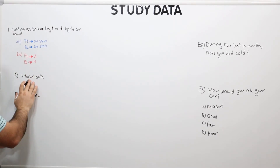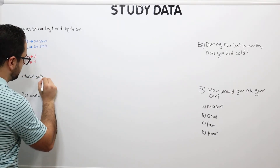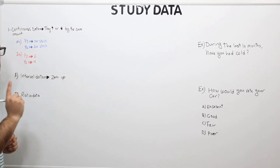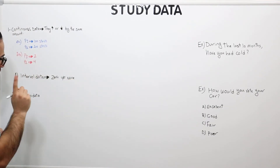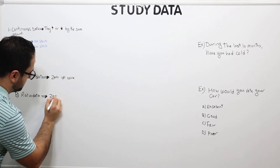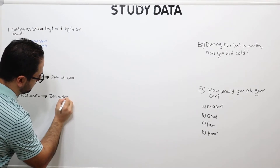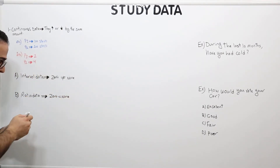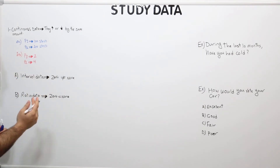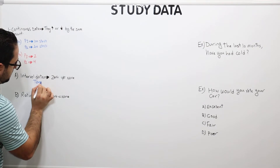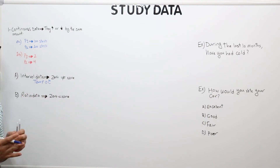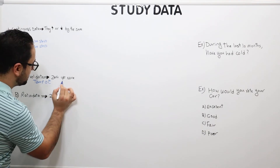So what's the difference between interval data and ratio data? For interval data, zero does not equal none. For example, a temperature of zero Celsius — it is zero, but it doesn't mean there is no temperature. And that's what I mean by zero does not equal none.